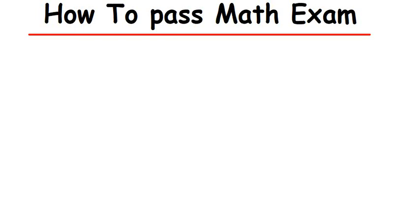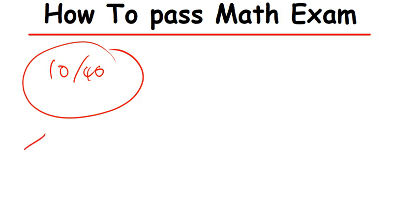Welcome back to Transcended. In today's video, I'm going to show you how you can pass a math exam with a bad CA. We're going to assume that someone has got a very bad CA — let's say a CA of less than 10, so 10 out of 40. You are still wondering if you are going to make it, still doubting if you can pass. But I'm here to tell you: it is possible, and I'm going to show you.